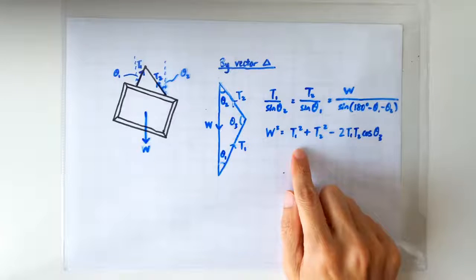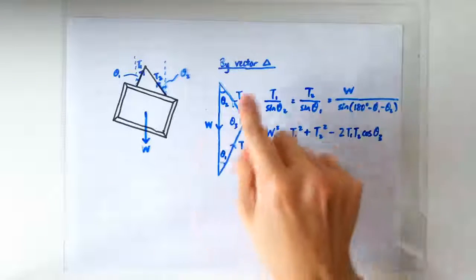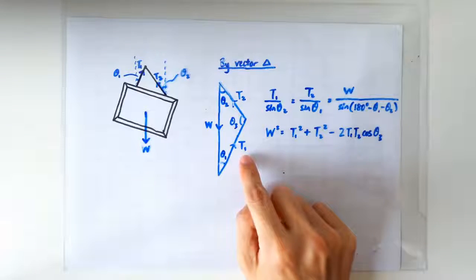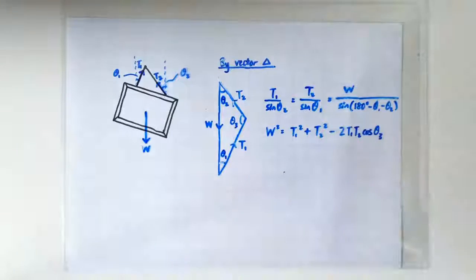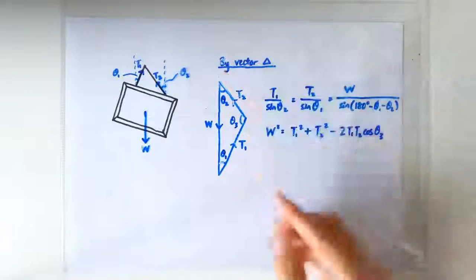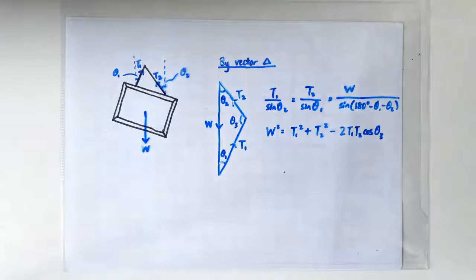Or sometimes it may involve the cosine rule. So A square is B square plus C square minus 2BC cosine of this angle. Or sometimes you just draw a scale diagram and then measure and read off the answer.